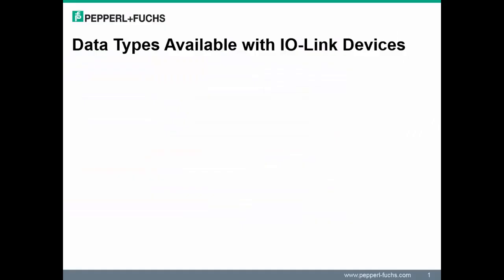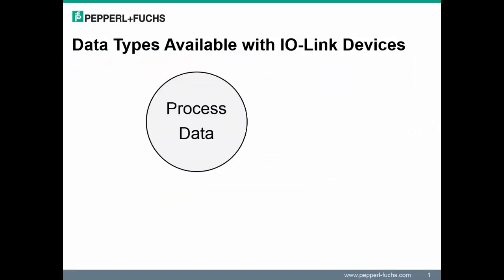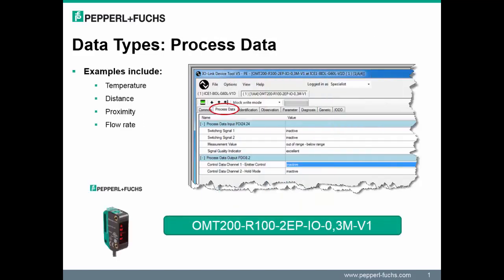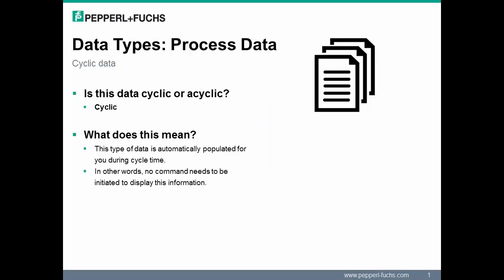There are three types of data available with IO-Link devices: process data, service data, and event data. Process data is information such as switch signals or distance values. On this slide, we take a closer look at the process data of an R100 sensor connected to port 1. Process data is cyclic data, meaning the data is automatically populated on a cycle time. In other words, no external commands are needed to initiate displaying this information.